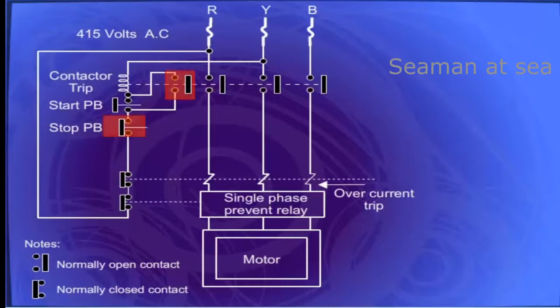The control circuit of DOL starting system has a contactor connected in series with its self-sealing contact and the normally closed stop push button.